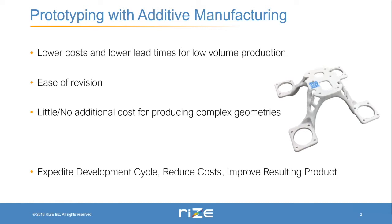A final benefit is that there is little or no additional cost for producing complex geometries. For traditional manufacturing methods it can be quite costly to produce complex surfaces or intricate tunnels and other kinds of geometry. Whereas with additive manufacturing, because material is being added instead of removed, it can produce very complex geometries — like organic surfaces with holes passing through them that aren't standard shapes — without any additional cost, since the process does not rely on simple geometries used in tooling.